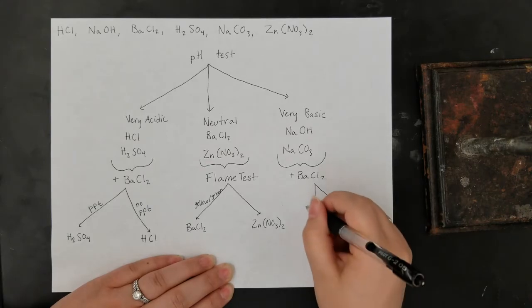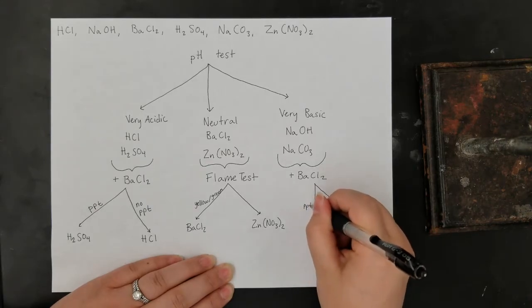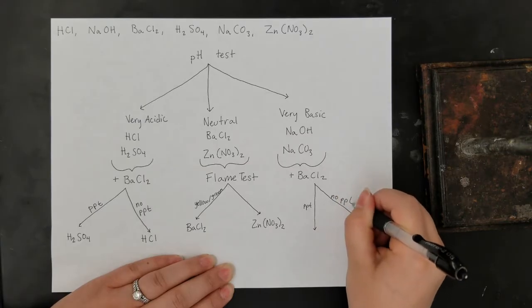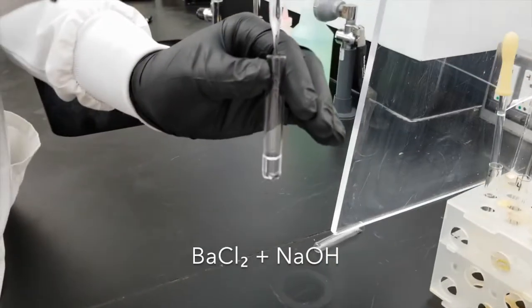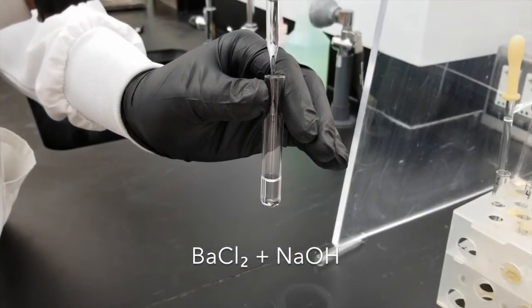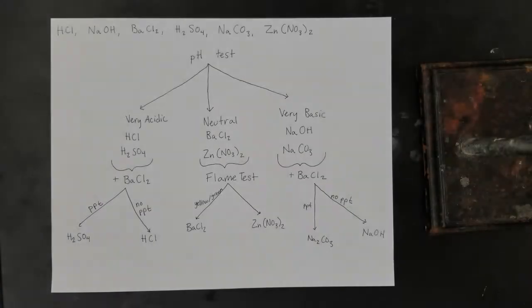Likewise, when barium chloride reacts with sodium carbonate, it produces a precipitate because barium carbonate is insoluble. But nothing happens when we combine it with sodium hydroxide. This will allow us to distinguish between the two basic solutions.